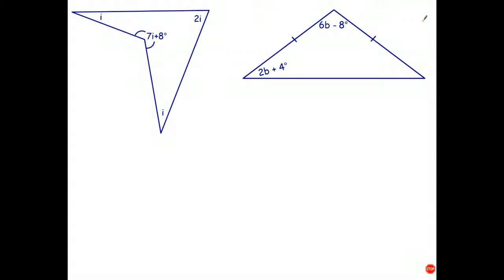Okay, welcome back students. Now what we have to use up here is the fact that this is a quadrilateral and all the angles in a quadrilateral add to 360 degrees. So I can write this equation: 7i plus 8 plus 2i plus i plus i adds to 360 degrees. And the reason we know that is all the angles in a quadrilateral add to 360.